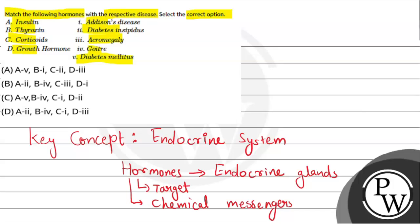Let's revise the question. Insulin can be matched with diabetes insipidus or diabetes mellitus. Thyroxine is related to hypothyroidism, so it can be matched with goiter. Corticoids are secreted by the adrenal gland and can be matched with Addison's disease. Growth hormone, secreted by the pituitary gland, is matched with acromegaly. Keeping all these options in mind, the most appropriate answer is Option D.